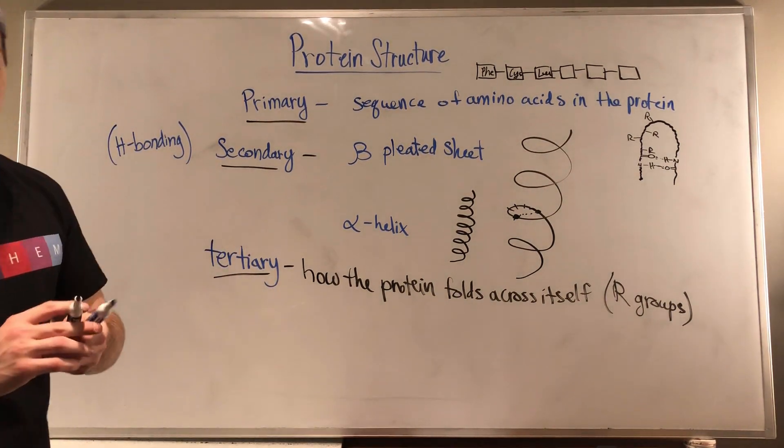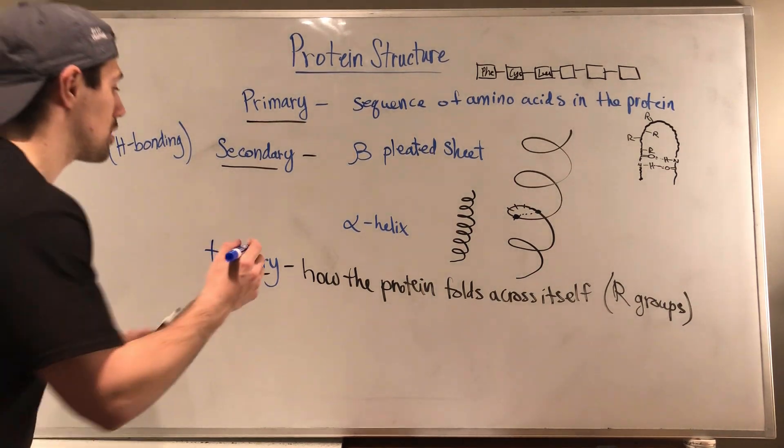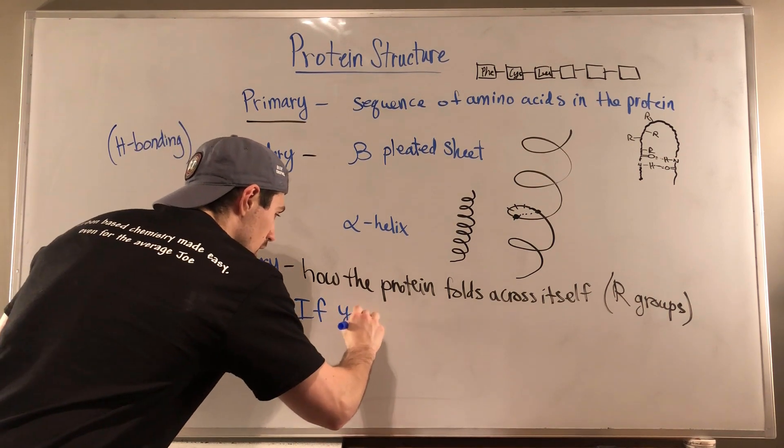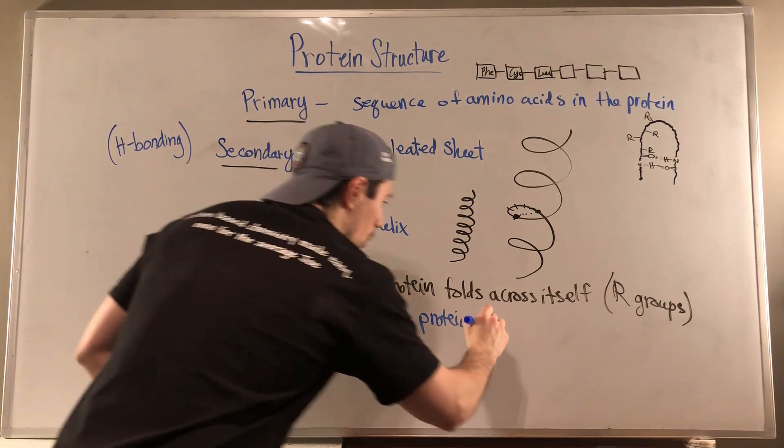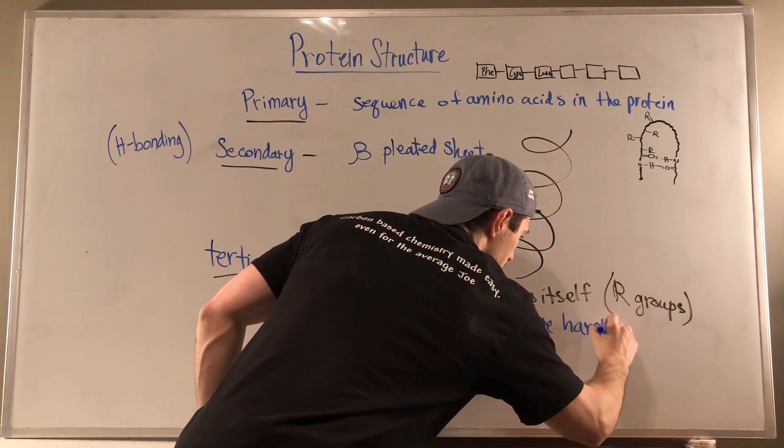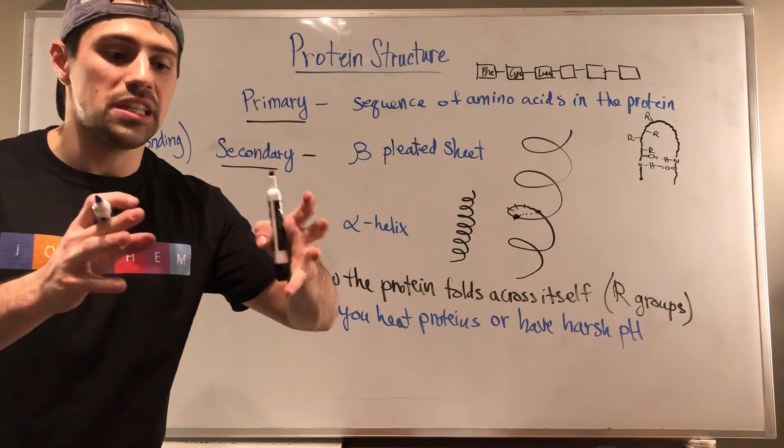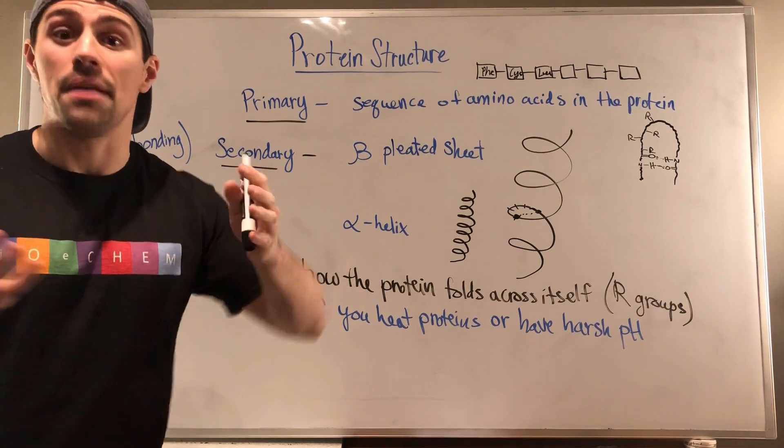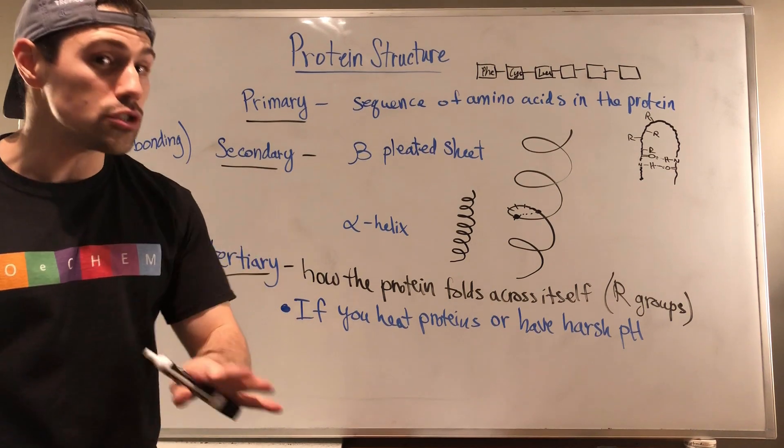A lot of that comes into play when you're talking about enzymes and other things like that. And what's interesting about tertiary structure is based on what's actually interacting. Like I said, I used this disulfide bridge for it as an example. If you heat proteins or have harsh pH conditions, so if you really crank up the temperature or you put a protein in a situation where it's super acidic or super basic, it might react differently and it might fold differently. And that changes how the protein behaves and reacts in certain situations.